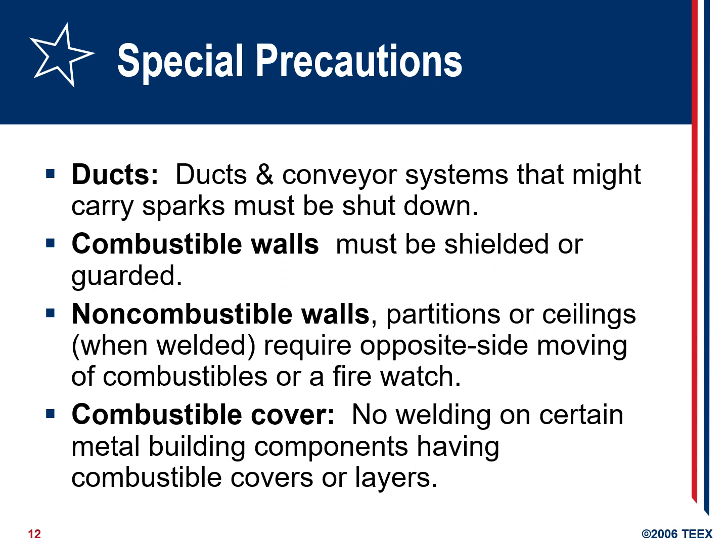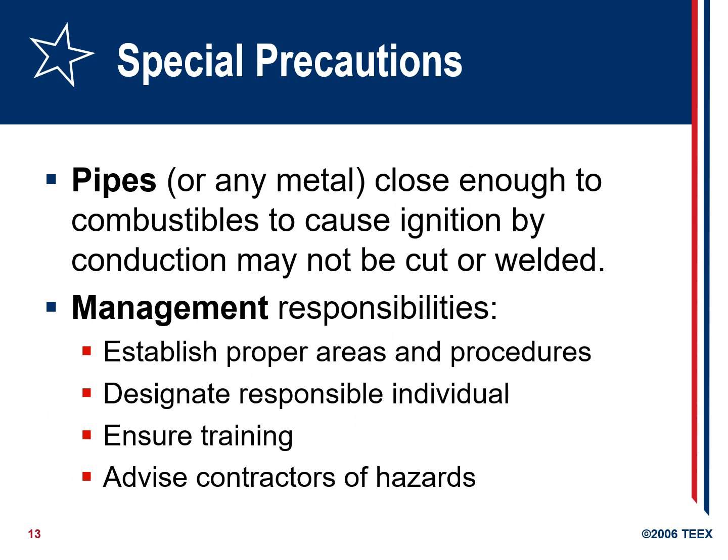Combustible walls must be shielded or guarded. When welding near non-combustible walls, partitions, or ceilings, the opposite side must be monitored for combustibles or a fire watch posted. No welding is permitted on certain metals or building components having combustible covers or layers. Any metal connected to a combustible that could cause ignition by conduction may not be cut or welded.